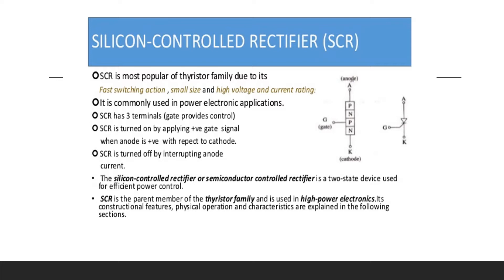We shall discuss this type of application after first establishing the fundamentals of device operation. This device is often called a thyristor to indicate its function as a solid-state analog of the gas thyratron. The thyratron is a gas-filled tube that conducts current when an arc discharge occurs at a critical firing voltage, analogous to the gate current control of the SCR. This firing voltage can be varied via voltage applied to a third electrode.